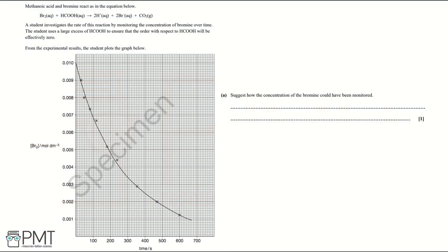Methanoic acid and bromine react as in the equation below. A student investigates the rate of this reaction by monitoring the concentration of bromine over time. The student uses a large excess of HCOOH to ensure that the order with respect to HCOOH will be effectively zero. From the experimental results the student plots the graph below.